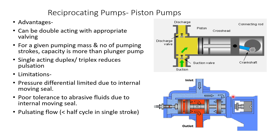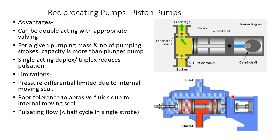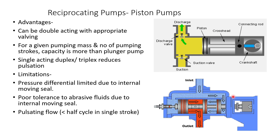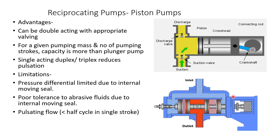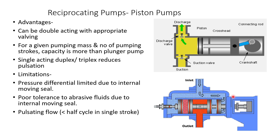Looking at the advantages of a reciprocating pump: it can be double acting with appropriate valving. For a given pumping mass and number of pumping strokes, capacity is more than a plunger pump. Single acting duplex or triplex configuration reduces pulsation. Limitations include that pressure differential is limited due to the internal moving seal — the piston seal — and it has poor tolerance to abrasive fluid. The flow is pulsating and is less than half cycle for a single stroke.